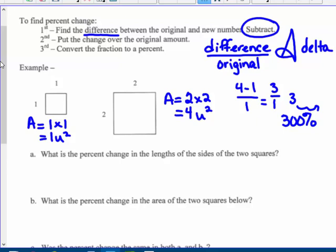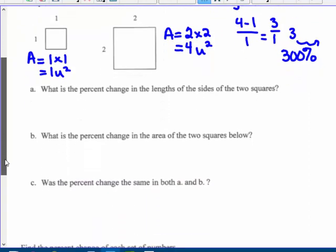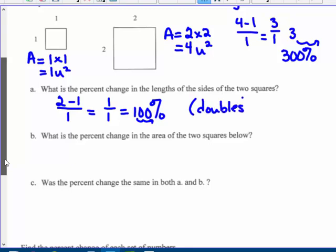What is the percent of change of the sides of the two squares? Well, the sides of the two squares went from 1 to 2, so 2 minus 1 over 1. The side length is a 100% change. That means that it doubled, which it did. What is the percent of change in the area? I did that up above. So it's a 300% change. If you double the length of the square, it triples the area. It actually quadruples the area, but the percent of change is a 300% increase.